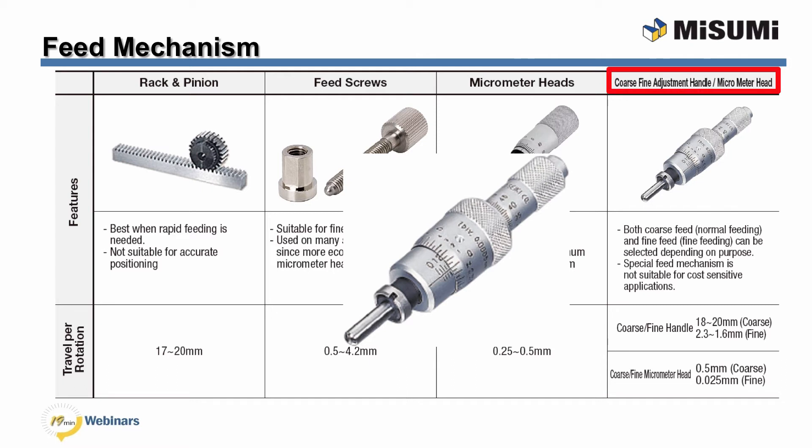This model offers a unique ability by having two types of adjustment: coarse and fine feeding. Two models are available — coarse fine handle and coarse fine micrometer head. With the coarse fine handle, coarse travel per rotation is 18 to 20 millimeters and fine travel per revolution is 2.3 to 1.6 millimeters. With the micrometer head, coarse travel per rotation is 0.5 millimeters and fine travel per revolution is 25 microns.